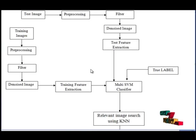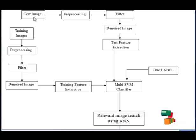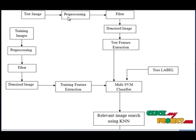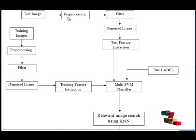This is the flow diagram for our proposed system. First, we give the test image as the input. The input image goes into the preprocessing stage, where it is converted to a grayscale image because image processing is easier and faster on grayscale images.